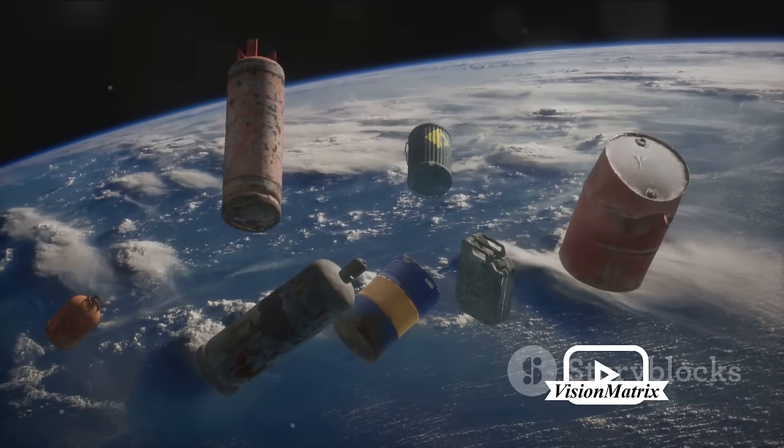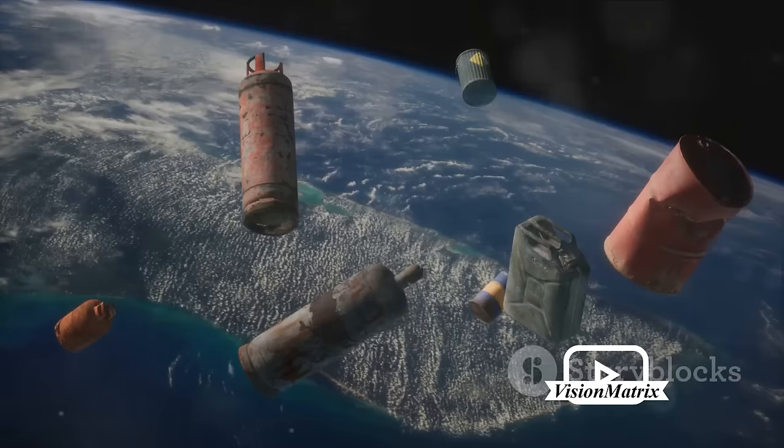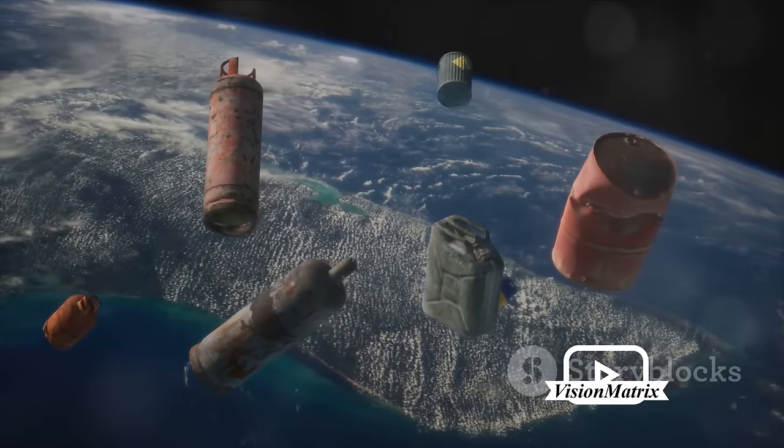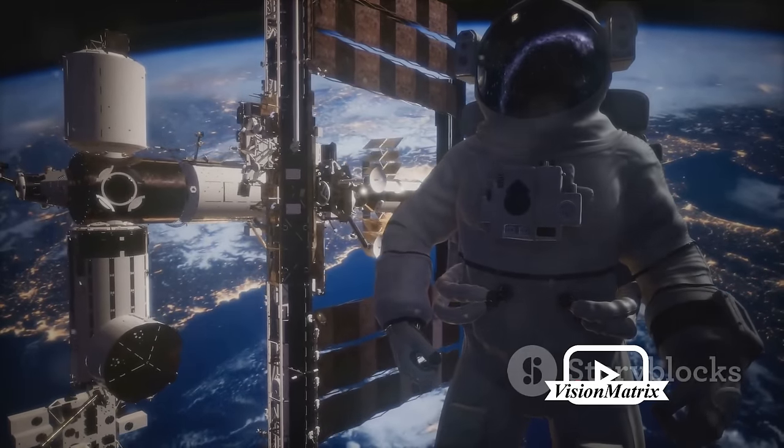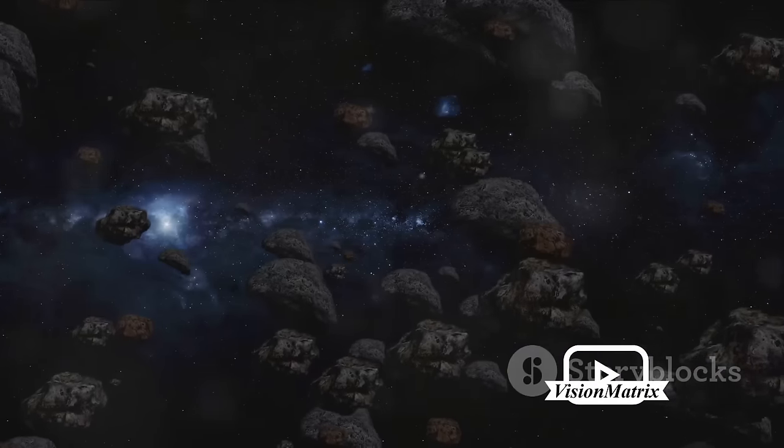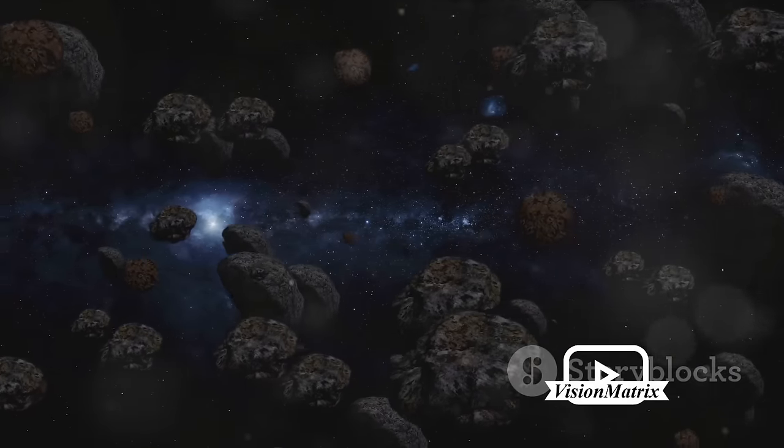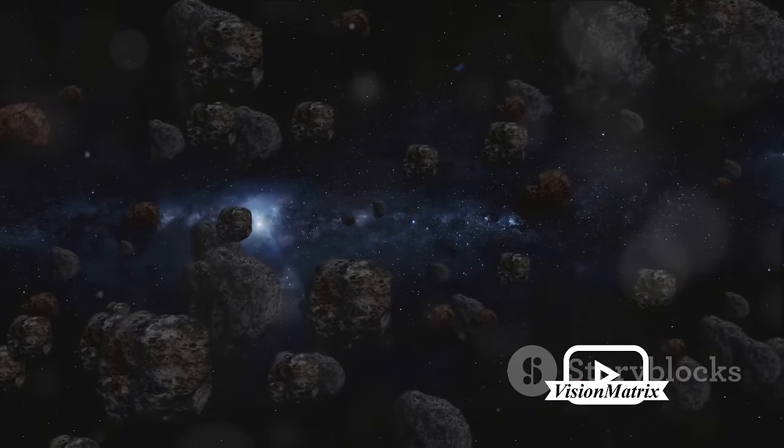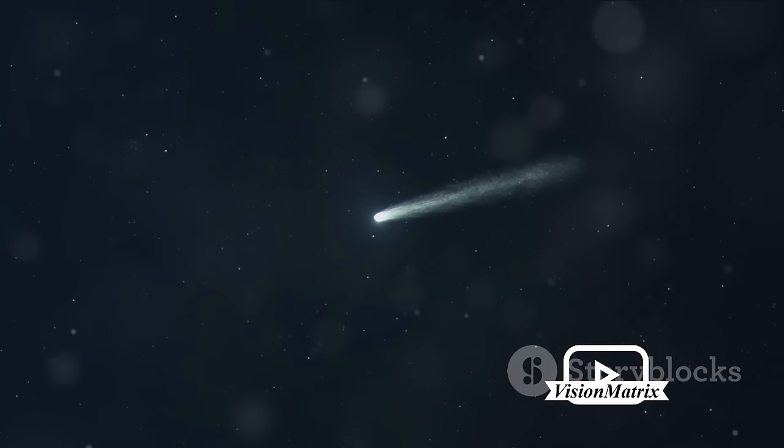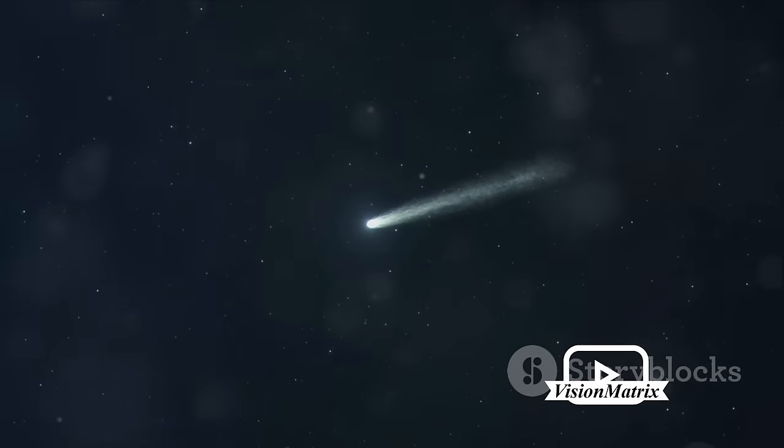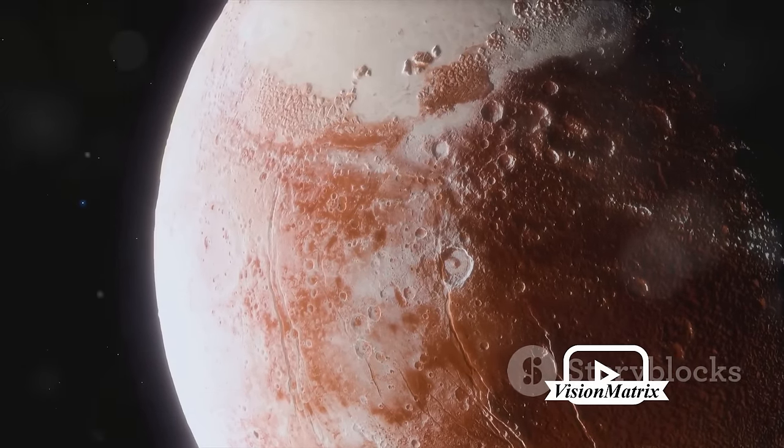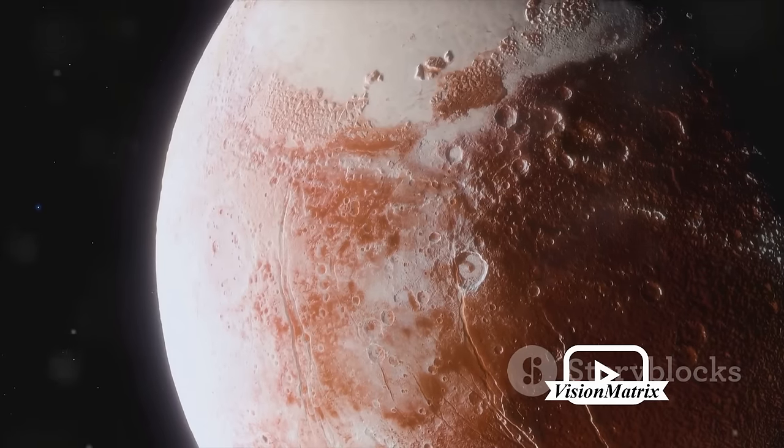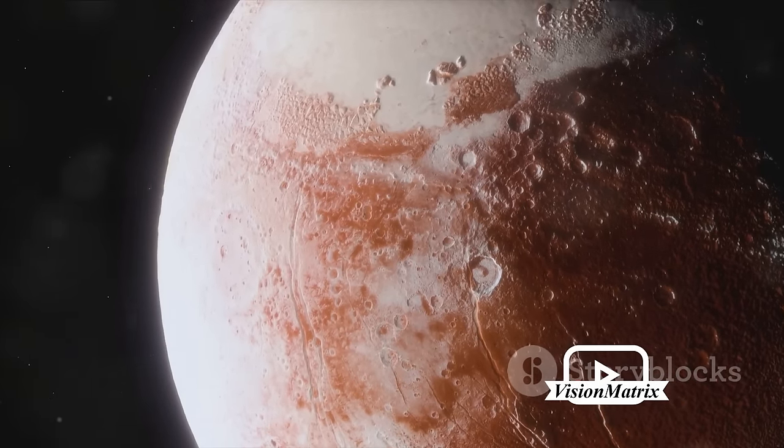The issue of space debris, therefore, is a significant one that space agencies worldwide are working to solve. The cosmos may be vast, but we must ensure our activities don't turn it into an interstellar junkyard. Venture now to the outermost regions of our solar system, where we find the Oort Cloud and the Kuiper Belt. These cosmic neighborhoods, located far beyond the orbits of Neptune and Pluto, are home to a myriad of icy bodies and remnants from the early solar system. The Oort Cloud, a theoretical sphere of icy objects, is thought to be the birthplace of many comets. Meanwhile, the Kuiper Belt, a donut-shaped region, is known for its dwarf planets, including the famous Pluto.